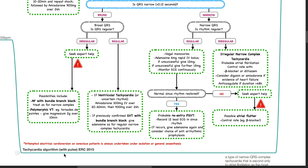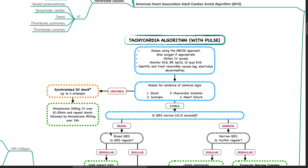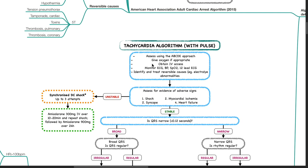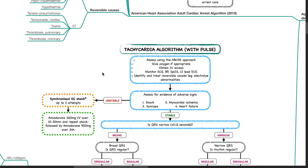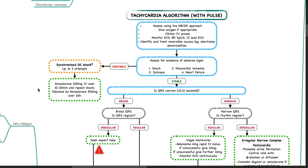Tachycardia algorithm with pulse, ERC 2015 guidelines: assess using the ABCDE approach, give oxygen if appropriate, obtain IV access, monitor ECG, BP, SpO2, and 12-lead ECG. Identify and treat reversible causes such as electrolyte abnormalities. Assess for adverse signs such as shock, syncope, myocardial ischemia, and heart failure. If present, provide synchronized DC shock up to 3 attempts. If arrhythmia still present, give amiodarone 300 mg IV over 10–20 minutes and repeat shock, followed by amiodarone 900 mg over 24 hours.